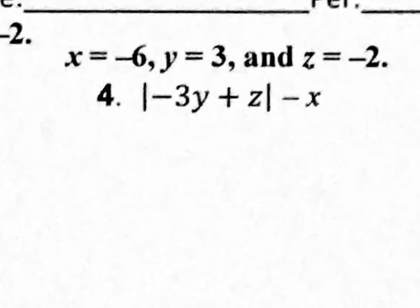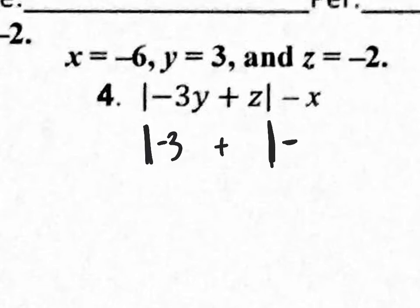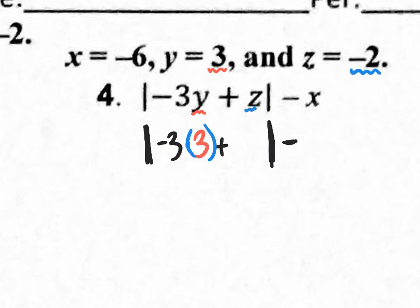These deal with X, Y, and Z values. Let's replace them with the numbers given — rewrite the expression exactly as it is, leaving blank spots where you have Y, Z, and X. The Y value is 3, so put a 3 there. Make sure you put a dot or parentheses so it doesn't look like 33 — it's really negative 3 times 3. The Z value is negative 2, and the X value is negative 6.